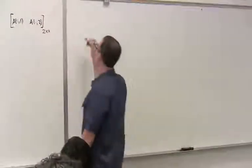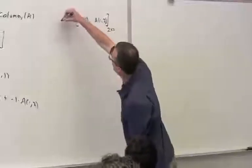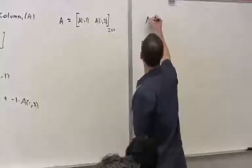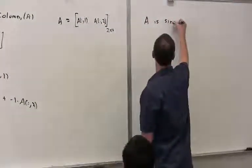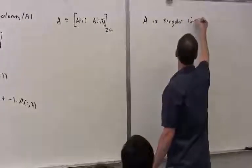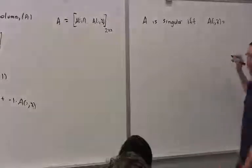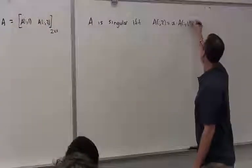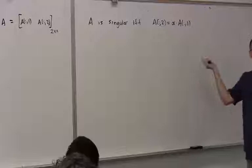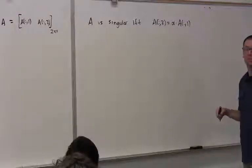If we say that this is A, and it's 2 by 2, A is singular if and only if what? a2 is some scalar multiple of a1, or vice versa, right?